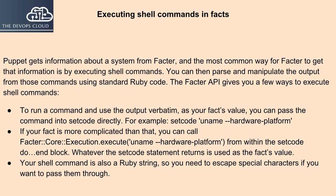Next, how to execute shell commands in facts? Puppet gets information about a system from Facter, and the most common way for Facter to get that information is by executing shell commands. You can then parse and manipulate the output from those commands using standard Ruby code. The Facter API gives you a few ways to execute shell commands. To run a command and use the output verbatim as your fact's value, you can pass the command into setcode directly — for example, setcode 'uname --hardware-platform'. If your fact is more complicated than that, you can call Facter::Core::Execution.execute('uname --hardware-platform') from within the setcode do block. Whatever the setcode statement returns is used as the fact's value. Your shell command is also a Ruby string, so you need to escape special characters if you want to pass them through.